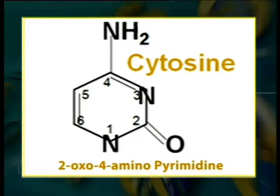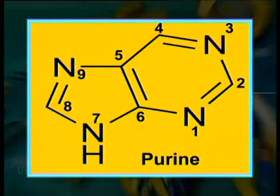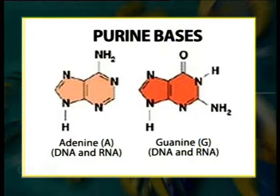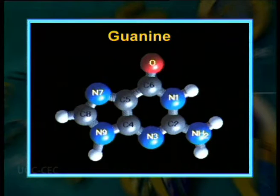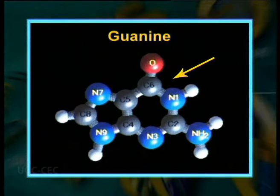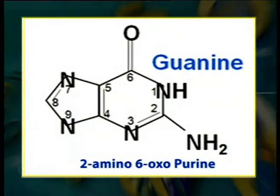Purine is a bicyclic structure consisting of a pyrimidine fused to a 5-membered imidazole ring. The 5-membered ring of purine has nitrogen at positions 7 and 9. Therefore, purines contain 5 carbons and 4 nitrogen atoms. The 2 major purine bases present in DNA are adenine and guanine. In adenine, an amino group is present at position 6, while in guanine, an amino group is attached at the 2nd carbon and a keto group is found at position 6. Therefore, adenine is 6-aminopurine and guanine is 2-amino-6-oxopurine.